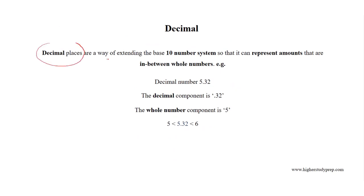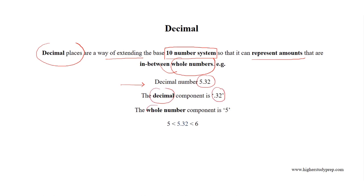Decimal places are a way of extending the base 10 number system so that it can represent amounts that are in between whole numbers. For example, in the decimal number 5.32, the decimal component is 0.32 and the whole number component is 5. Where 5.32 is greater than 5 but less than 6, thus the decimal number 5.32 is in between the whole numbers 5 and 6.